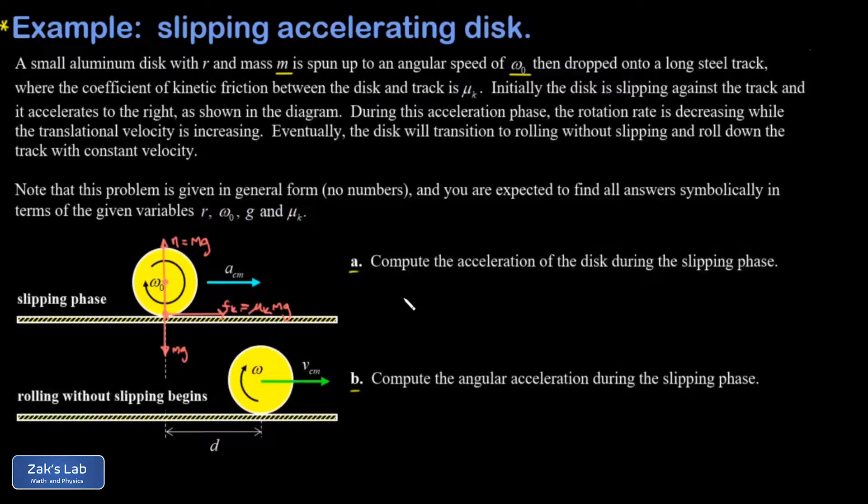So first, getting the acceleration of the disk is not that bad. I just apply Newton's second law in the x direction. So fₙₑₜ equals mass times the acceleration of the center of mass. Well, there's only one force acting in the x direction, and it's that kinetic friction force. And I'll go ahead and plug that in, since we already wrote it as μₖ mg. We have μₖ mg is equal to m times a center of mass. And so it turns out the acceleration of the center of mass of this disk during this slipping phase is equal to μₖ times g.